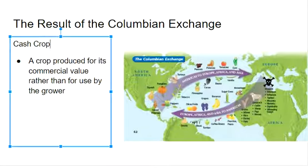So what this means is a cash crop is grown by a farmer with the intention to sell, not to consume. Cash crops included these new crops that were found in the Americas, such as potatoes, tomatoes, corn, pumpkin, peppers, and tobacco.